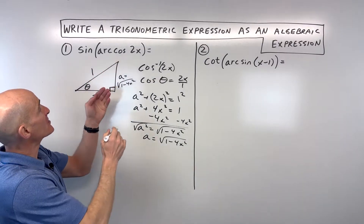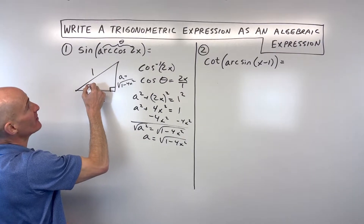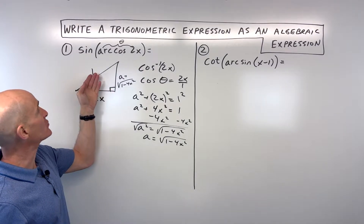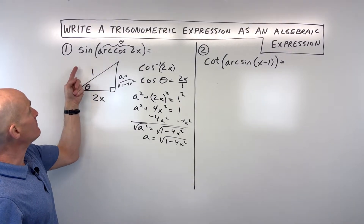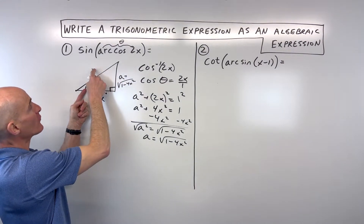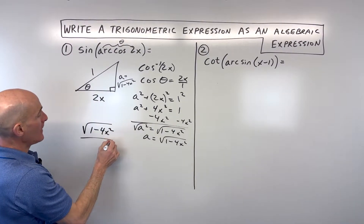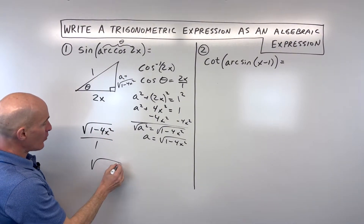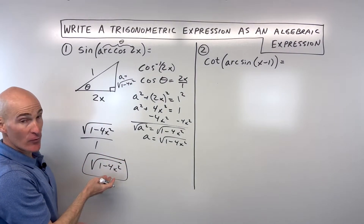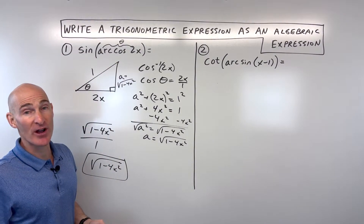Now that's what this arc cosine represents — it represents this angle right here. Arc cosine is saying cosine of what angle equals 2x over 1. So now we say, what's the sine of this angle? Sine is the ratio of the opposite side over the hypotenuse. So that gives us square root of 1 minus 4x squared over 1. Anything divided by 1 is itself, so we get the square root of 1 minus 4x squared. That's an algebraic expression for this trigonometric expression.